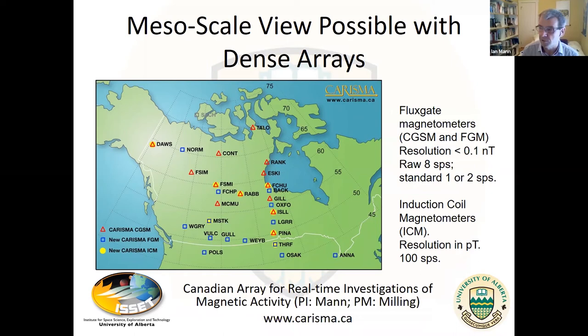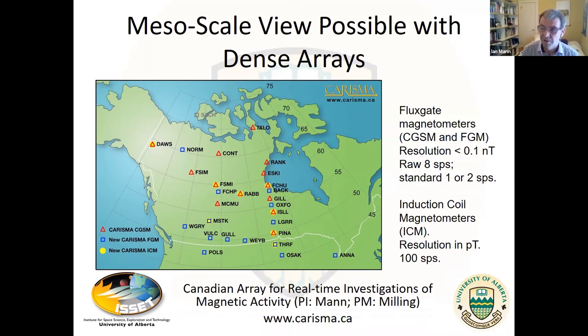These are fluxgate instruments, principally, with sub-0.1 nanotesla resolution. The standard data products are one-second or two-second datasets from the fluxgates. We're also running a sub-network of induction coils at 100 samples per second with picotesla resolution. I believe and hope to demonstrate that networks of this kind can be a very powerful tool for scientific discovery. Details are on the website at carisma.ca.